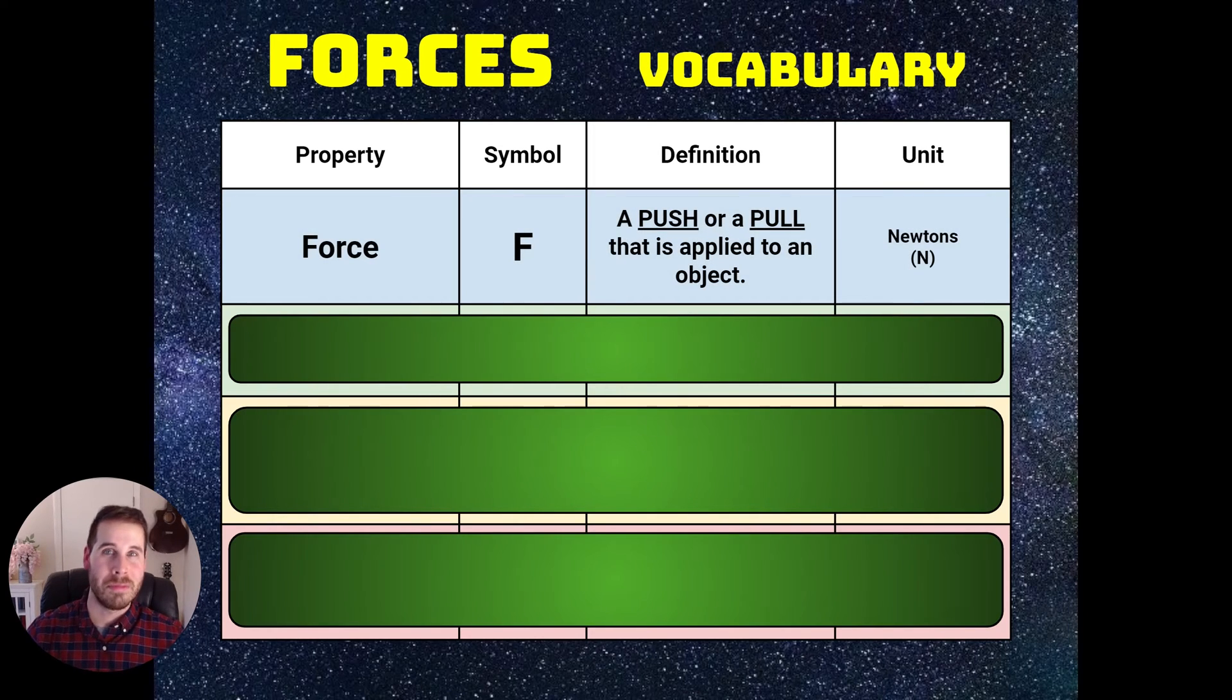The first one is force, obviously. The symbol for a force would be F, usually capital F, and it's defined as a push or a pull applied to an object. The unit that we measure force in is the Newton. You can probably guess what that's named after. It's named after Isaac Newton, the famous scientist. So that's force. You'll need to know a lot about those because the unit is called forces.